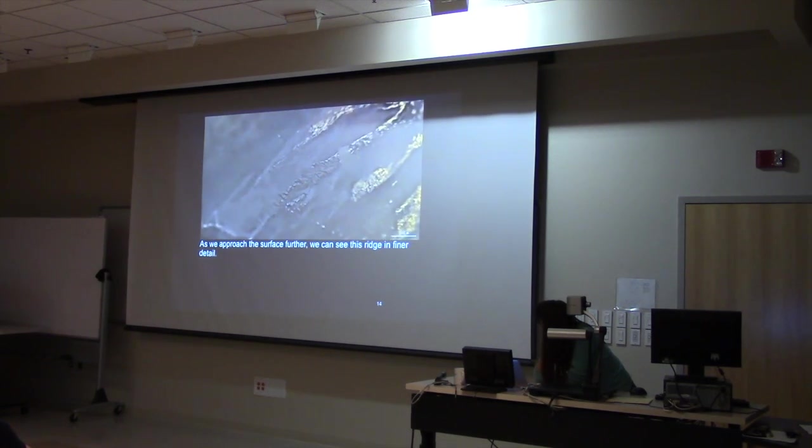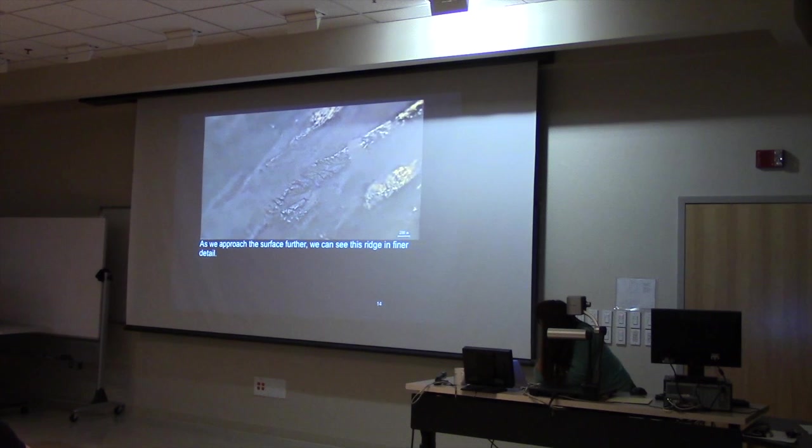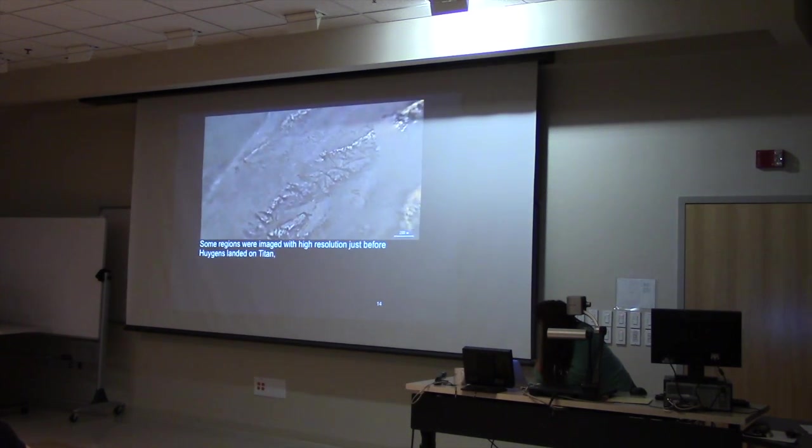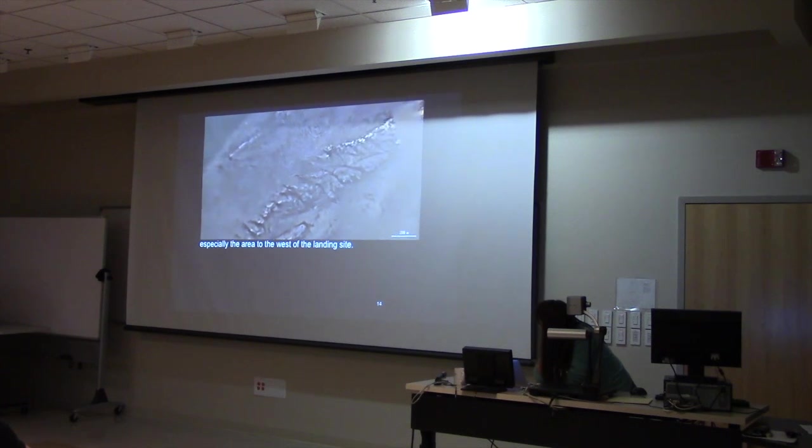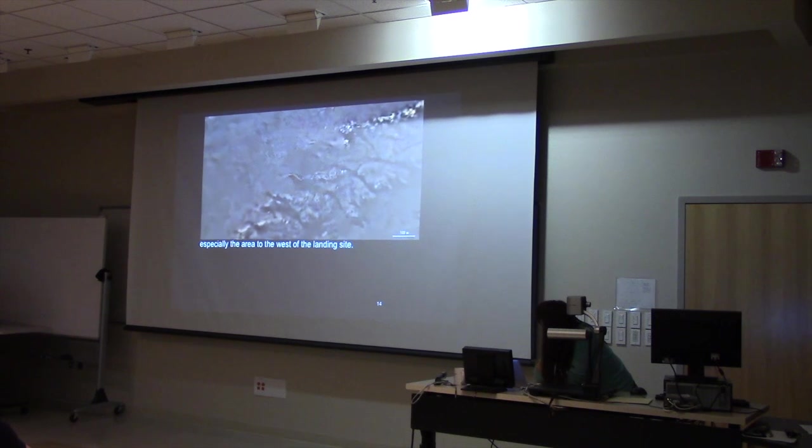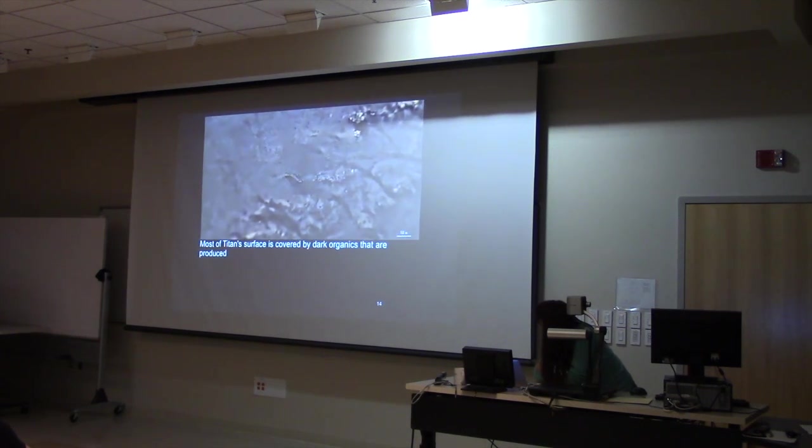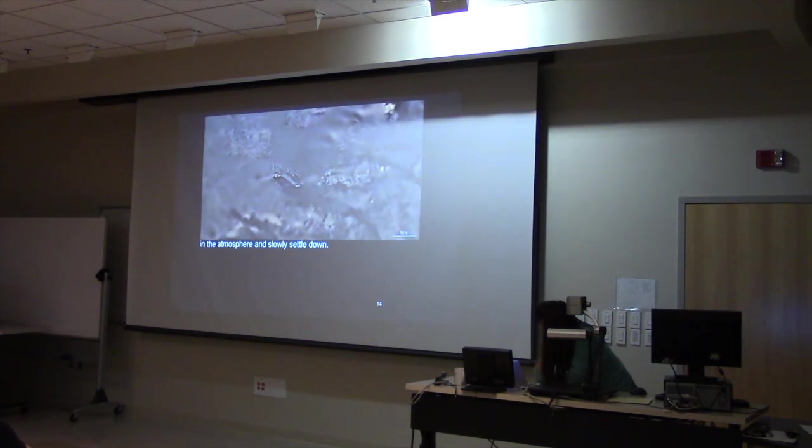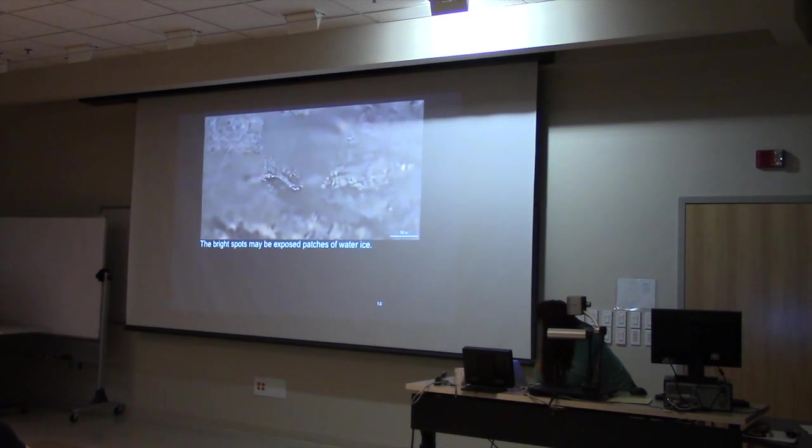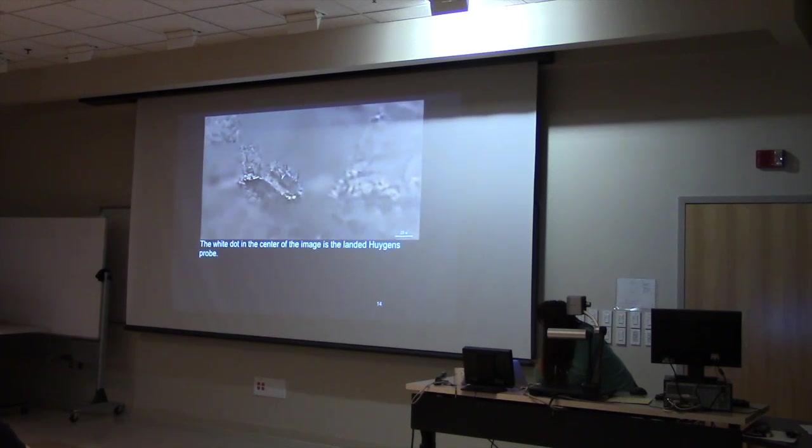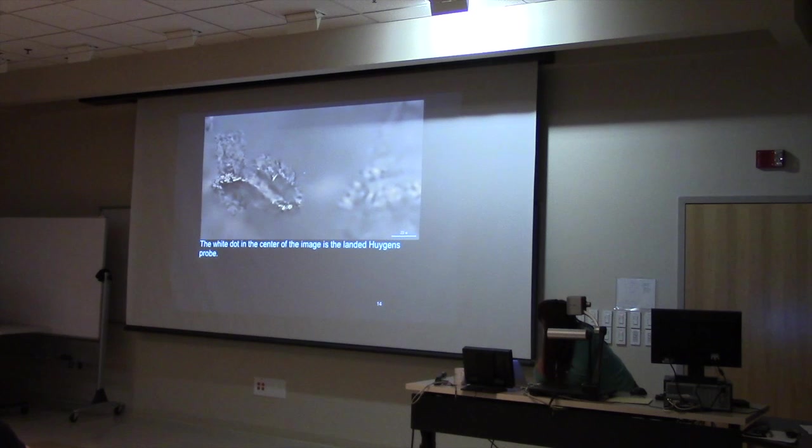A complicated network of channels where rivers of methane flowed at some time in the past. To the east of the landing site is a system of bright ridges standing out above the dark, dry lake bed. The ridges have intricate structures that tell stories about their past. The Huygens probe descended toward one of these ridges. As we approach the surface further, we can see this ridge in finer detail.